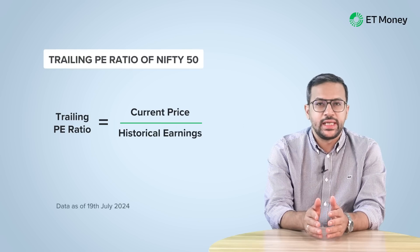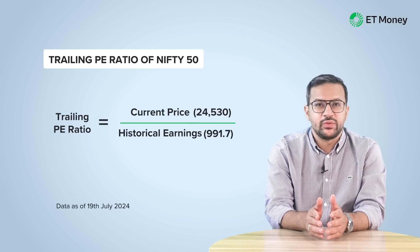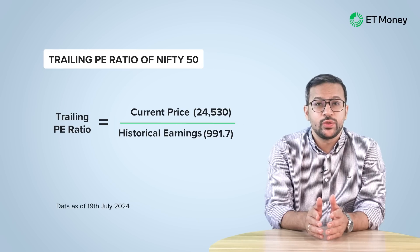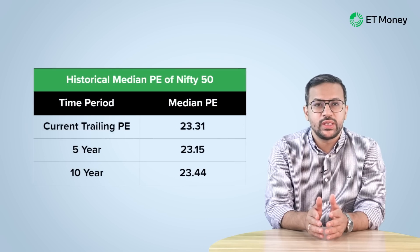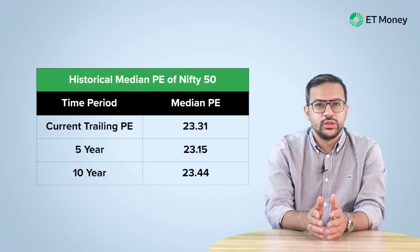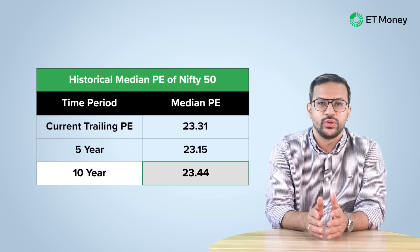As of July 19, the Nifty 50 level was 24,530 and its earnings per share was 991.7. So the Trailing PE Ratio of Nifty 50 is 23.31. If we compare this with the PE Ratio of the last 10 years, they are close — the 10-year median PE Ratio of Nifty 50 is 23.44.